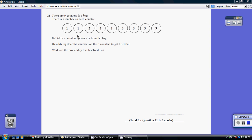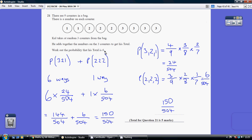Question 21. So 9 counters, 3 taken at random, work out that the total is exactly 6. So I'm taking 3 counters. So how can I get exactly 6?